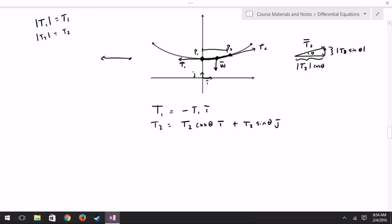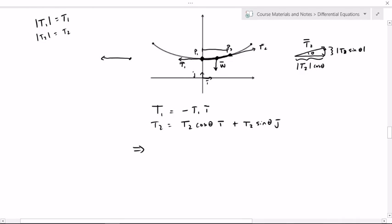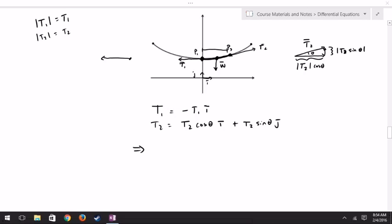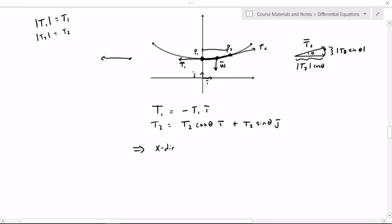Now that would imply, all together, all of my i components have to add together to give me zero. So in the i direction, x direction I should say, I know that negative T1 plus T2 cosine of theta has to equal zero. And in the y direction,